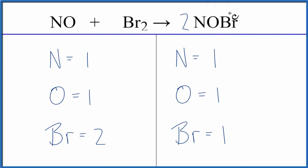Now this 2 applies to everything, so we have the 1 Bromine times the 2, that gives us 2 Bromines. 1 Oxygen times the 2, now we have 2 of those, and 1 Nitrogen times the 2, so we have 2 Nitrogens.